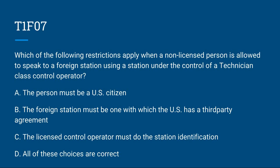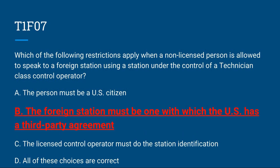T1F07: Which of the following restrictions apply when a non-licensed person is allowed to speak to a foreign station using a station under the control of a Technician class control operator? A. The person must be a U.S. citizen. B. The foreign station must be one with which the U.S. has a third-party agreement. C. The licensed control operator must do the station identification. Or D. All of these choices are correct. Correct answer is B: the foreign station must be one with which the U.S. has a third-party agreement.